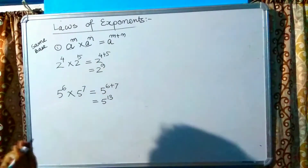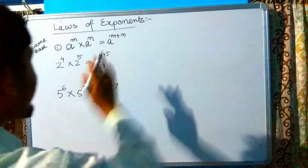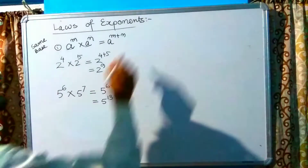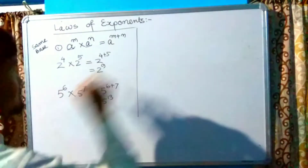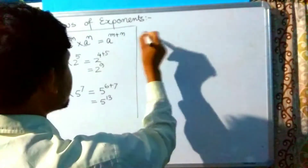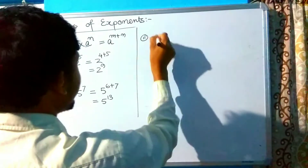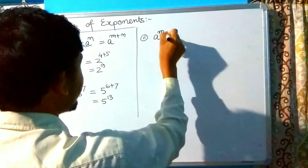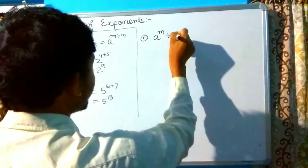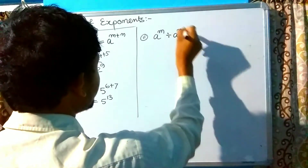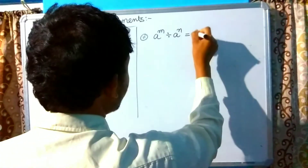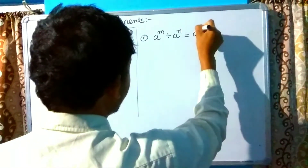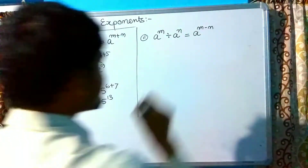That completes multiplication of exponents. Now, Law 2 — Division: a raised to the power m divided by a raised to the power n equals a raised to the power m minus n. When we divide, the powers are subtracted.